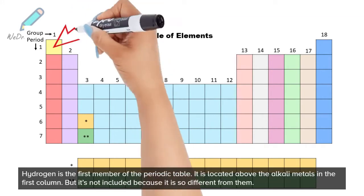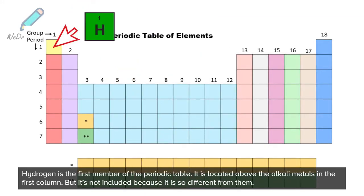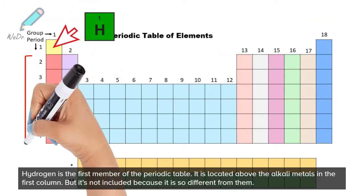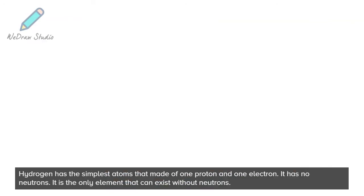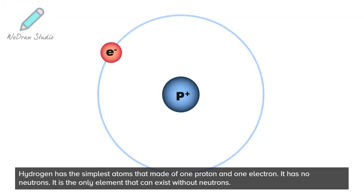Hydrogen is the first member of the periodic table. It is located above the alkali metals in the first column, but it's not included because it is so different from them. Hydrogen has the simplest atoms, made of one proton and one electron. It has no neutrons. It is the only element that can exist without neutrons.